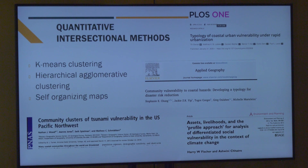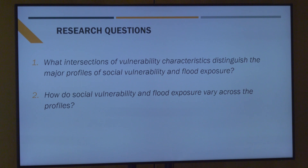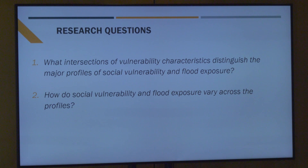For my colleagues and me, two main research questions structured our analysis. First: what intersections of vulnerability characteristics distinguish the major profiles of social vulnerability and flood exposure in the United States? This is a nationwide study for the coterminous United States — unfortunately, places like Puerto Rico, Alaska, and Hawaii are often excluded because data aren't available, and that was the case with our flood data. Second question: how do social vulnerability and flood exposure vary across these profiles?